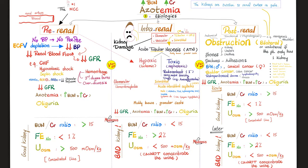In acute tubular necrosis, expect muddy brown granular casts in the urine, markedly decreased GFR, and BUN and creatinine much higher than in pre-renal azotemia. Oliguria is worse. Since the kidney is now damaged ('bad kidney'), the BUN-to-creatinine ratio is less than 15, FeNa is greater than 2%, and the kidney cannot concentrate urine.